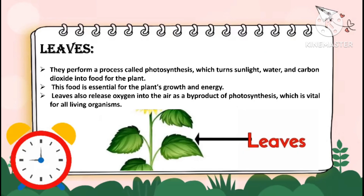Leaves. They perform a process called photosynthesis, which turns sunlight, water and carbon dioxide into food for the plants. This food is essential for the plant's growth and energy. Leaves also release oxygen into the air as a by-product of photosynthesis, which is vital for all living organisms.